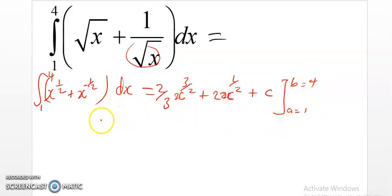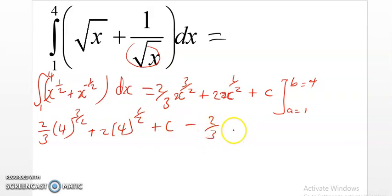If we evaluate this, we simply get 2 by 3 multiplied by 4, which is the upper limit, raised to 3 over 2 plus 2 into 4 raised to a half plus constant c, minus 2 over 3 raised to 1, evaluating using the lower limit, 3 over 2 plus 2 into 1 raised to a half plus constant c.